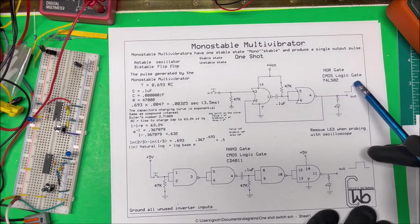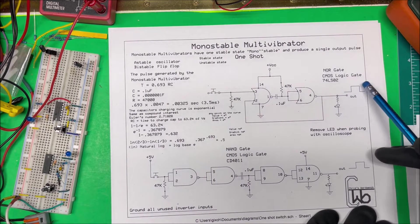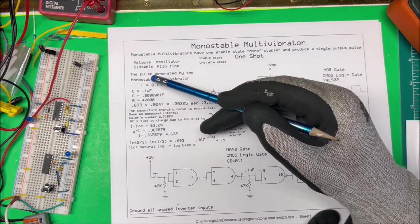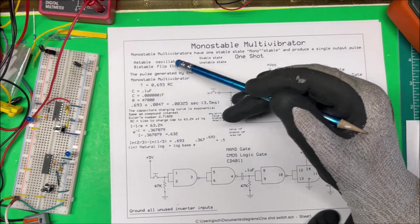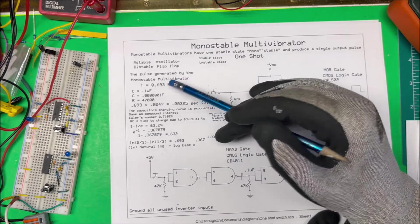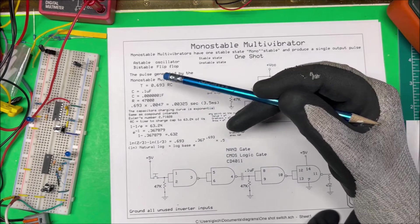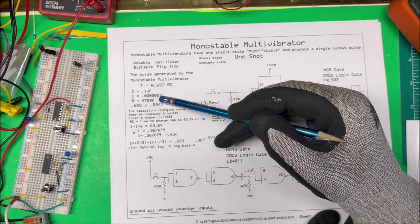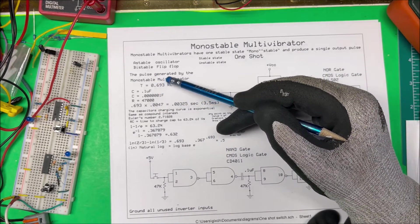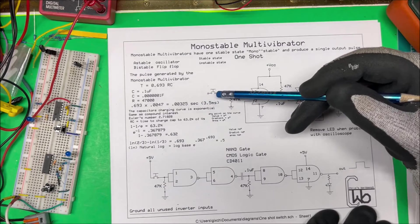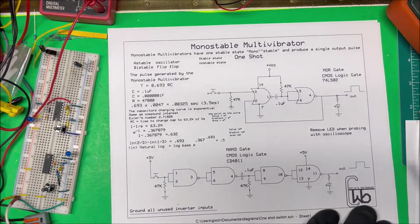To calculate the time it takes for this pulse, you use this formula: T equals 0.693 times RC. In this case I'm using a 0.1 microfarad capacitor and a 47k ohm resistor, and if I multiply those together and multiply it by 0.693, it comes out to 3.5 milliseconds.